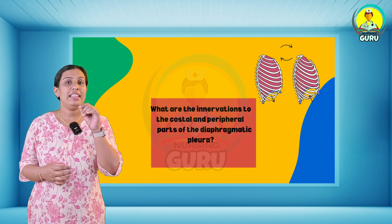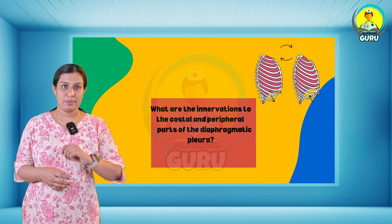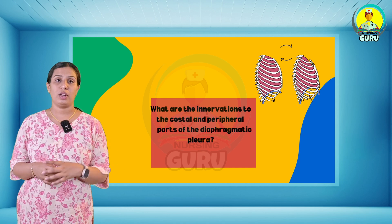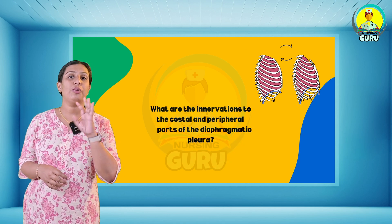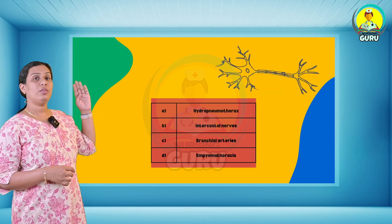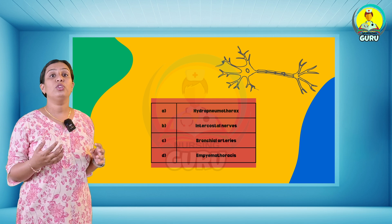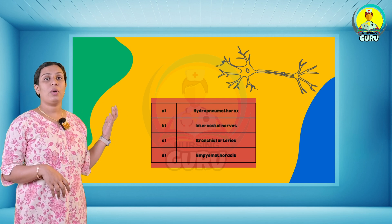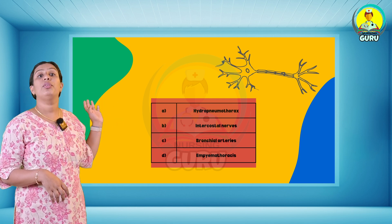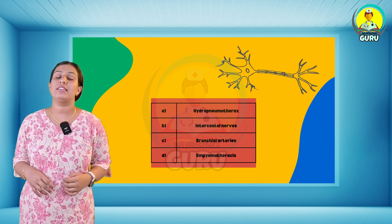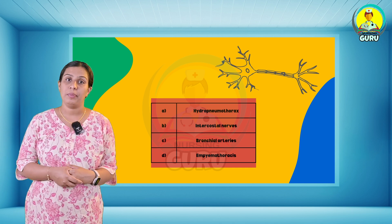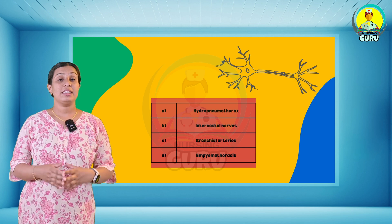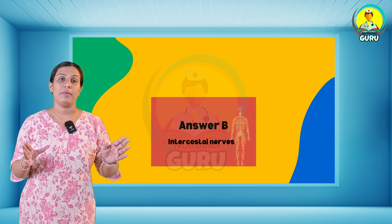Eleventh question: what are the innervations of the central and peripheral parts of the diaphragmatic pleura? Four options are shown, including hydropneumothorax, intercostal nerves, and bronchial nerves. The answer is option B.